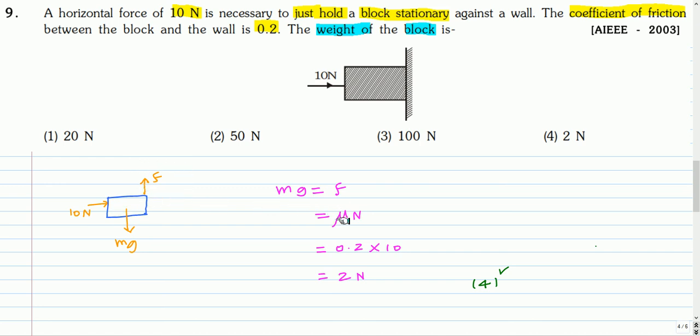So mg equal to f, and friction force is maximum, so it is μN. So from this we get the weight of the block is 2 N. The correct option is option 4.